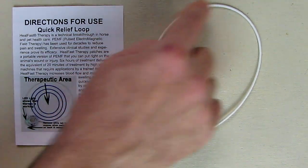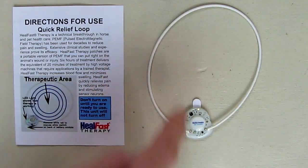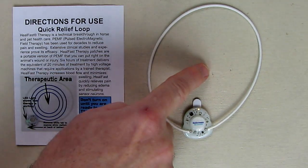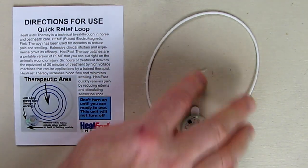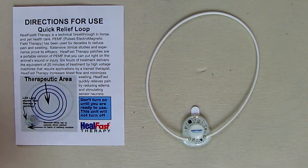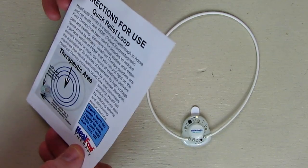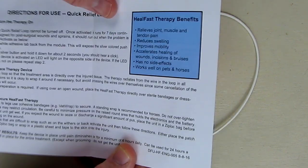You can see it has a loop on there. The therapeutic area is inside that loop. If I was working on a wound, I would make sure that the wound is in the center or the muscle area is in the center of this loop for the best efficiency and therapy. Now, this little booklet talks about how it works and how to turn the unit on.